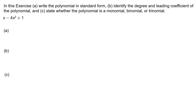In this exercise, part a, write the polynomial in standard form. Part b, identify the degree and leading coefficient of the polynomial. And part c, state whether the polynomial is a monomial, binomial, or trinomial. The polynomial is: x minus 4x squared plus 1.